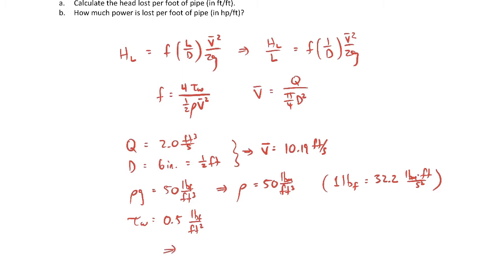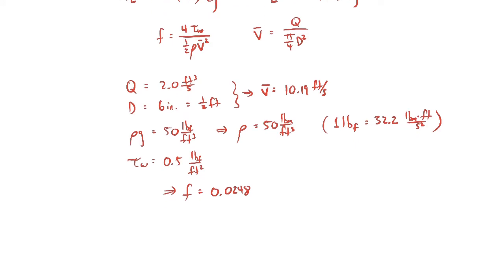After performing the unit conversion, the friction factor comes out to be 0.0248. Now that we have the friction factor, along with the pipe diameter, average velocity, and gravity (32.2 feet per second squared), we can find the head loss per unit length. Plugging in those numbers, the result is 0.08, which is dimensionless since head loss is in terms of length per length. That completes Part A.